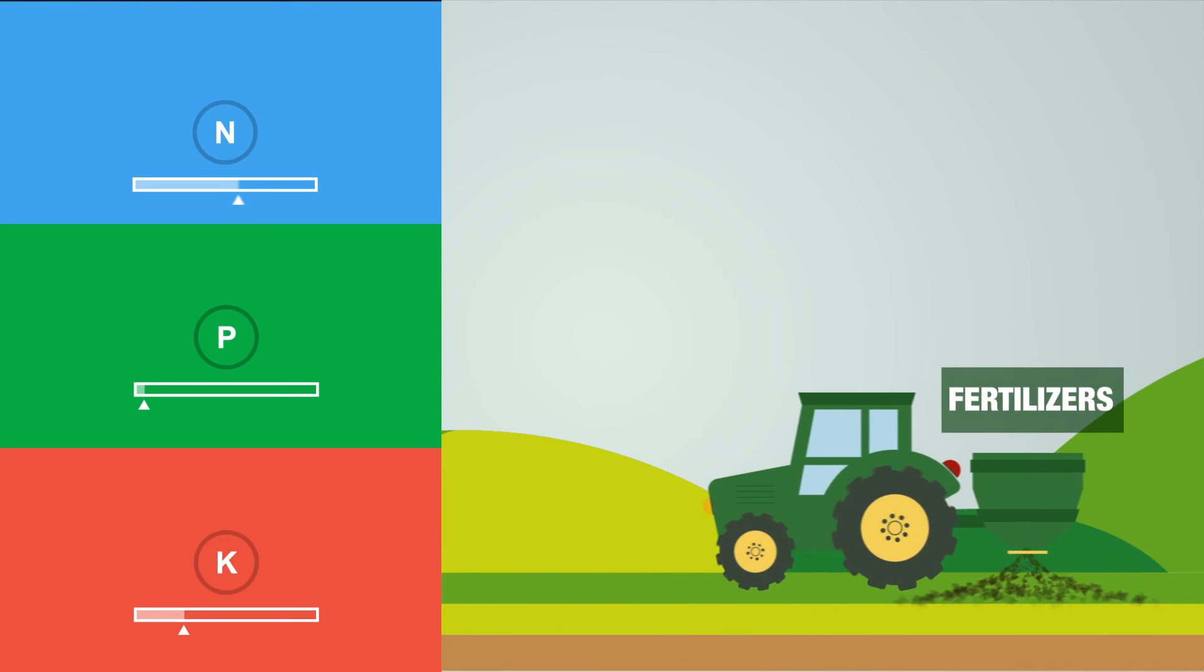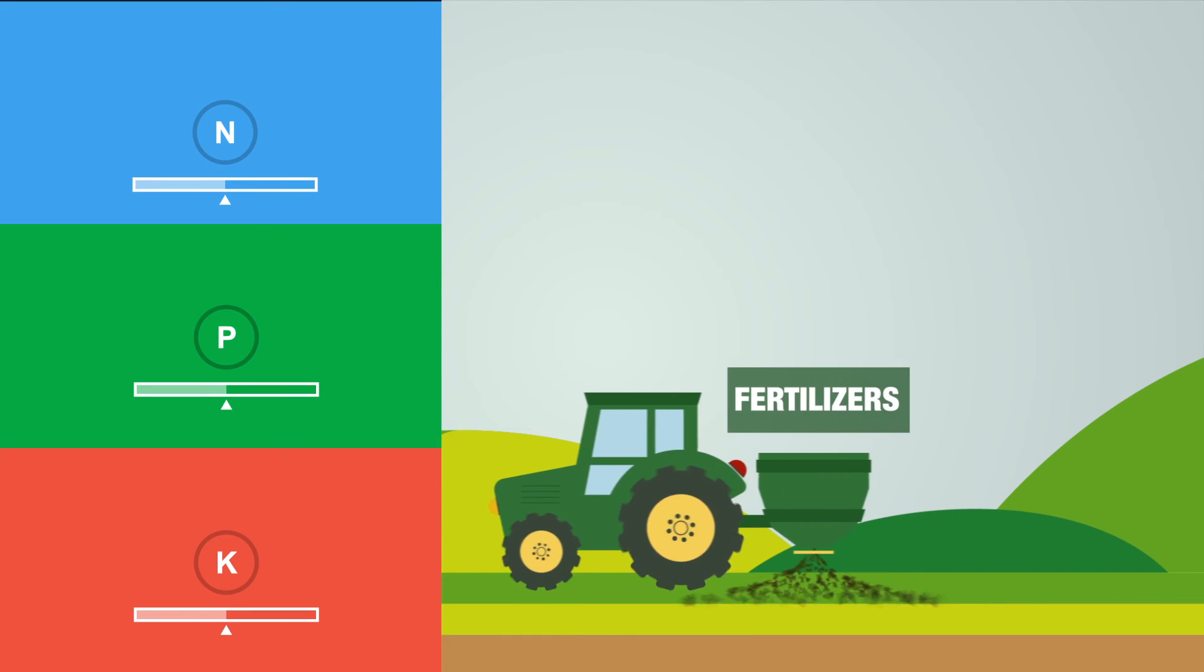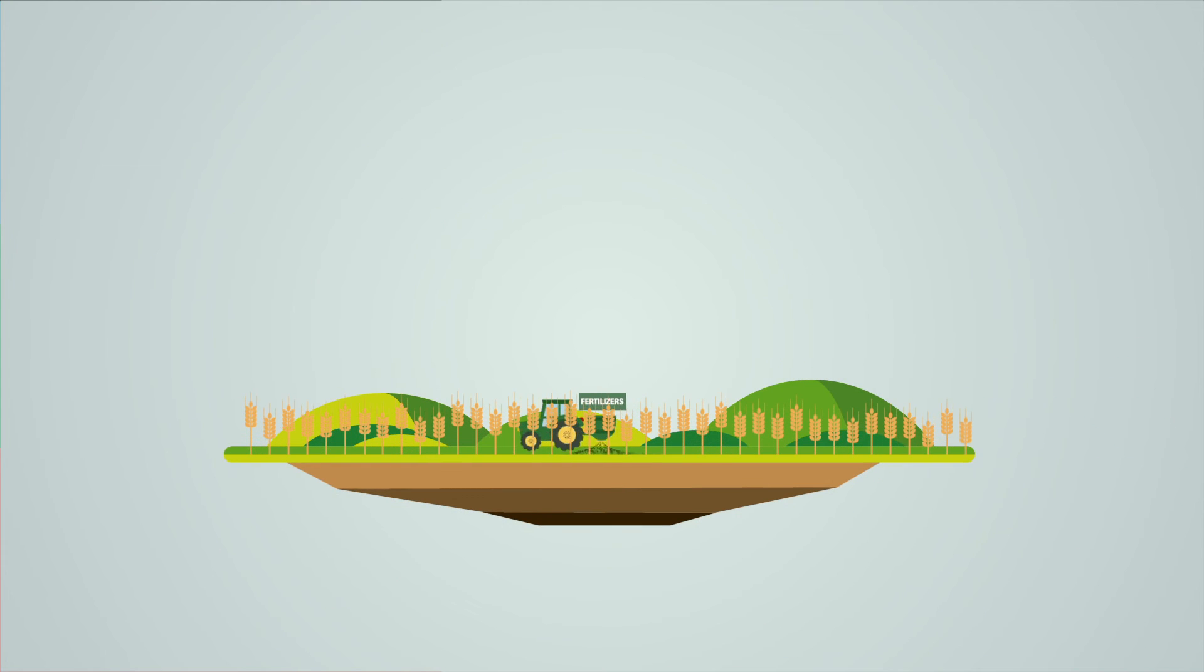In this way, a balanced supply of nitrogen, phosphorus, and potassium enriches the earth sustainably and allows a good harvest.